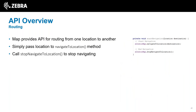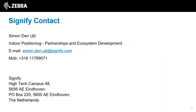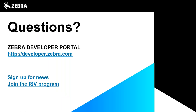The SDK also provides routing from one location to another. You simply call navigateToLocation, passing the destination location, and call stopNavigateToLocation when they've reached their destination. That's pretty much all there is in terms of the SDKs. The Signify contact for direct questions is Simon Donnell, who works in the indoor positioning department - his contact details are on the slide. That brings us to the end of the presentation - happy to answer any questions.